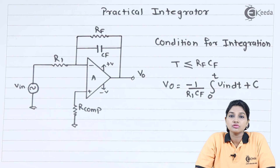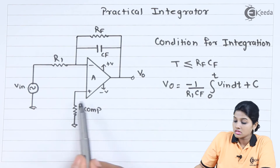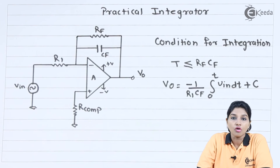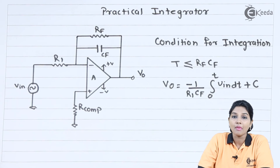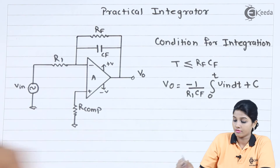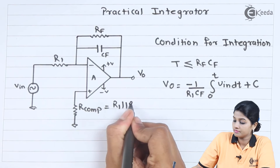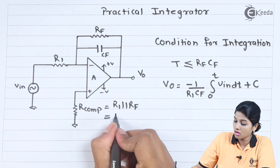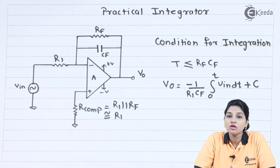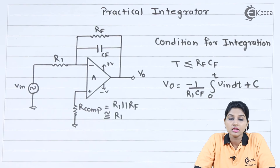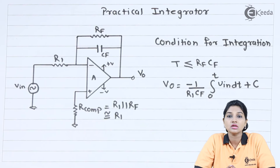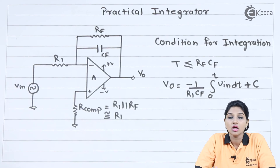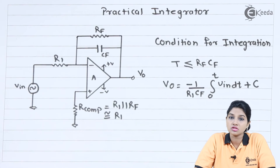From the circuit we can see that the resistor R_comp is connected to the non-inverting terminal of the op-amp, and it is the parallel combination of R1 and RF, which is approximately equal to R1 only. As the value of RF is very high, the operation of the circuit remains the same. Even at high frequency, the capacitive reactance reduces to a low value, so the capacitor will shunt the resistance RF and the operation of the circuit remains the same.